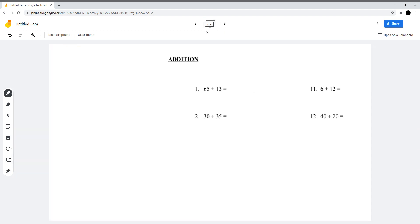Addition. Number 1: 65 plus 13. 5 plus 3 is 8, 6 plus 1 is 7, so 78. Number 2: 30 plus 35. 0 plus 5 is 5, 3 plus 3 is 6, and the answer is 65.